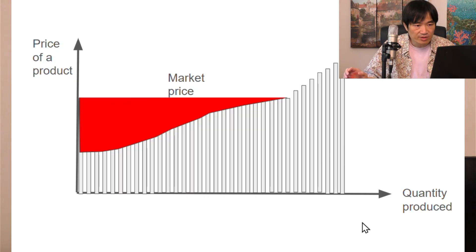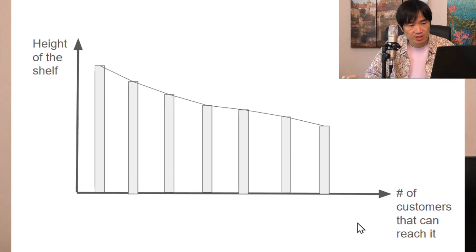And the demand curve is sort of the opposite. So instead of a tunnel, let's imagine the top shelf of a store. So the lower it is, the more people will be able to reach it.